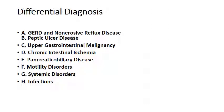Systemic diseases that can cause similar symptoms include diabetes mellitus, chronic kidney disease, thyroid disease, hyperparathyroidism, adrenal insufficiency, and collagen vascular disease. Gastric infections other than H. pylori can also cause dyspepsia, including cytomegalovirus, tuberculosis, or fungal infections. Parasites to consider include Giardia, Strongyloides, and related organisms.